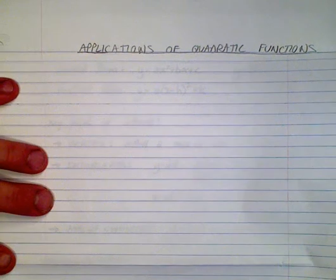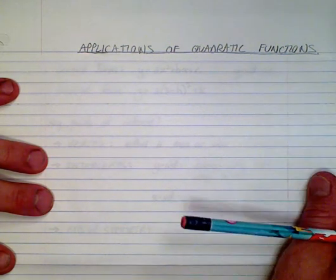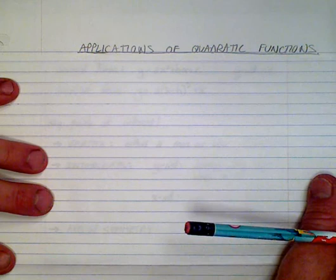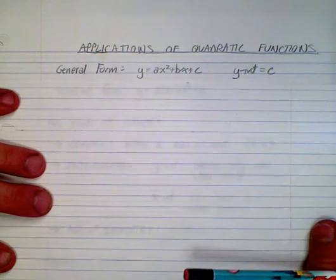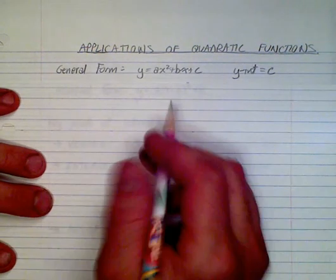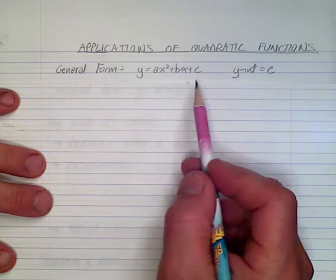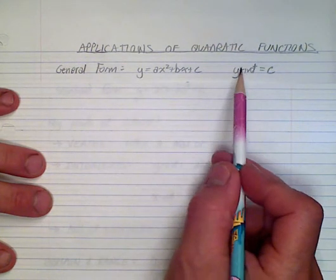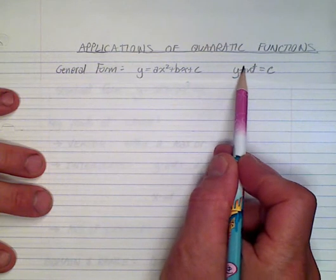This video deals with the applications of quadratic functions. Before we get into these word problems, it's a good idea to review a few of the basics. The general form of the quadratic function looks like ax squared plus bx plus c. One of the best pieces of information we can get from this is the y-intercept, which is just that c value.